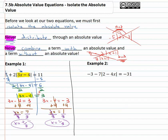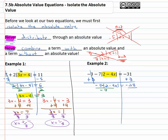Let's take a look at one more example where we have to get the absolute value alone before we can do anything else with it. Here we have negative three minus seven times the absolute value of two minus four x equals negative thirty-one. To start getting that absolute value alone so we can do the positive or negative thing, we first add three to both sides, giving us negative seven times the absolute value of two minus four x equals negative twenty-eight. That's negative seven times the absolute value, so we get rid of it by dividing both sides by negative seven, leaving us with the absolute value of two minus four x equals positive four.